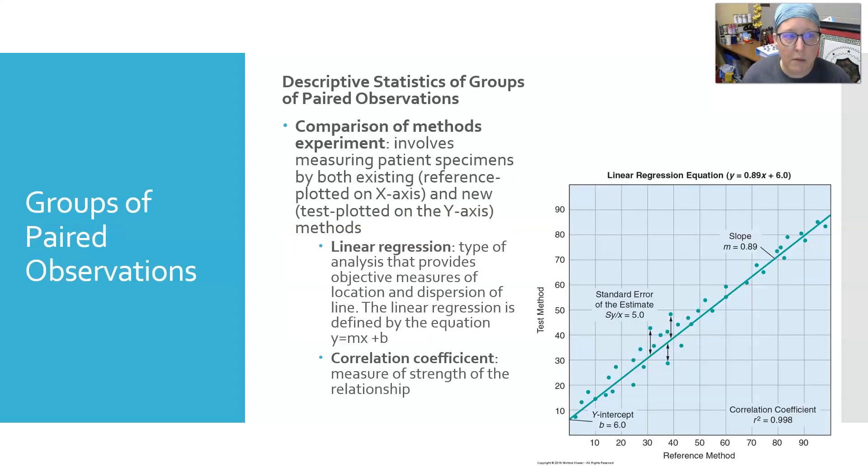There are also stats used to compare observations - groups of paired observations. A comparison of methods experiment involves measuring patient specimens by two different methods: an existing or reference method and a new method. Generally, the reference method is plotted on the x-axis and the new method on the y-axis. For example, in this graph, if we took this point here, we could see the new test method has a reading of 40, but according to the reference method, the reading was 35. You run a series of patients on the new method and old method and plot those pairs together.